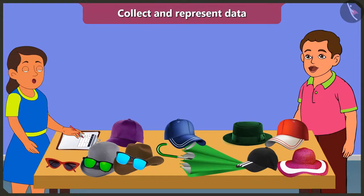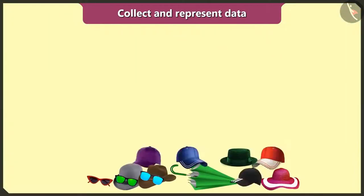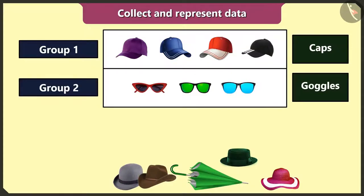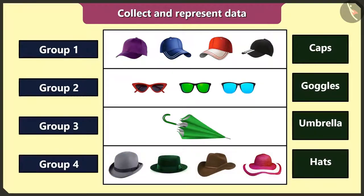Ok, you do your work and I will go now. So, as we all know that summer season is nearing, I will collect data about the number of caps, the number of goggles, the number of umbrellas, and the number of hats that I have. First of all, I will make groups of similar objects — first group of caps, second group of goggles, third group of umbrellas, and the fourth group of hats.